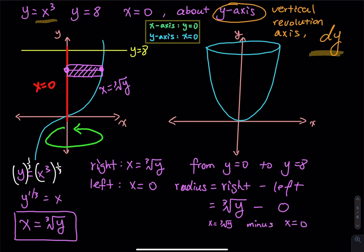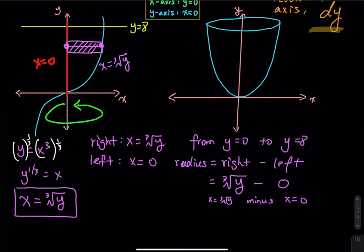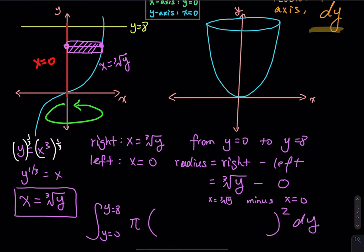Now we have all the ingredients. The volume is: V = ∫ from y=0 to y=8 of π·r² dy, where r = y^(1/3) − 0. Do not simplify the integrand.